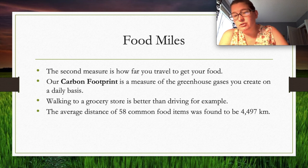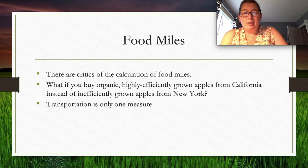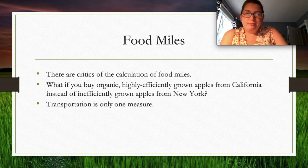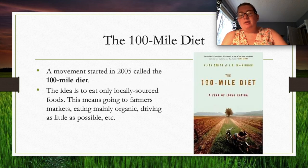The average distance of 58 common food items was found to be 4,497 kilometers — that's a significant carbon cost. Critics of food miles calculations point out that transportation is only one factor — for example, buying efficiently grown organic apples from California may have a smaller footprint than inefficiently grown apples from New York.